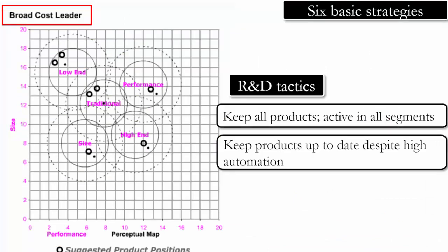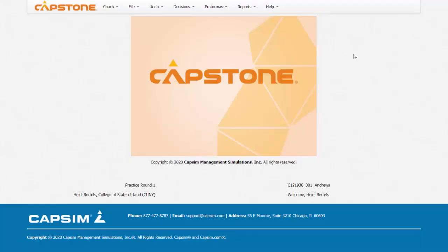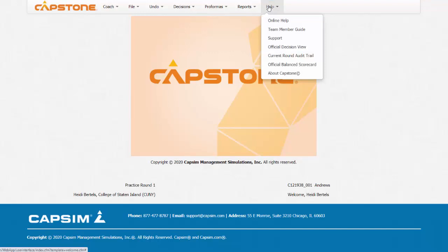That's the R&D interface. Before we end the R&D lecture, I want to remind you that it is really critical to always make decisions that align with your strategy. The online help guide provides lots of information on what kind of decisions you should be making in different departments depending on the strategy you have chosen. When in the decision-making interface, you can go to Help and then to Online Help.